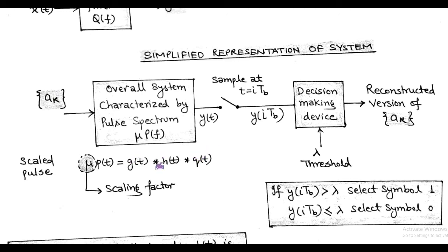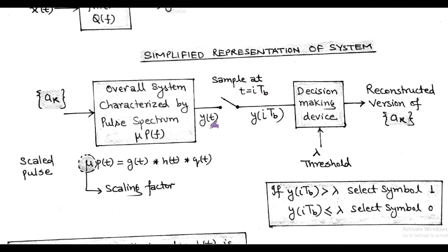The overall pulse spectrum has input a_k, which is the level encoded signal. Here the impulse response p(t) is different from g(t), where g(t) is the impulse response of the transmit filter and p(t) is the overall impulse response. The output y(t) of the overall system is sampled at the sampling instant t = i·T_b, and we get the sampled output y(i·T_b).